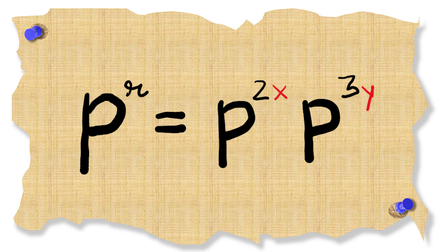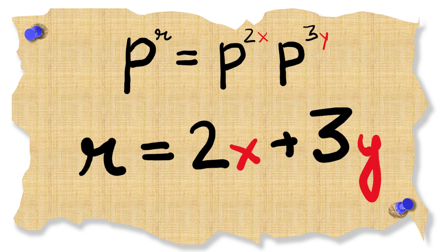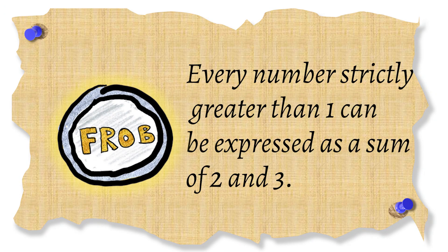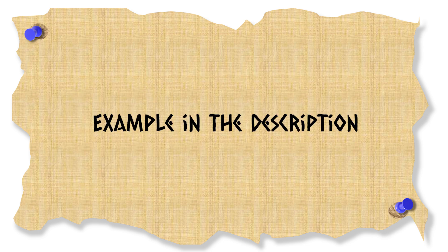And hey what'd you know this just becomes a question of finding x and y such that 2x plus 3y is equal to r. And from the Frobenius coin problem we know that every number larger than one can be expressed as a sum of twos and threes. I've put an example in the description.